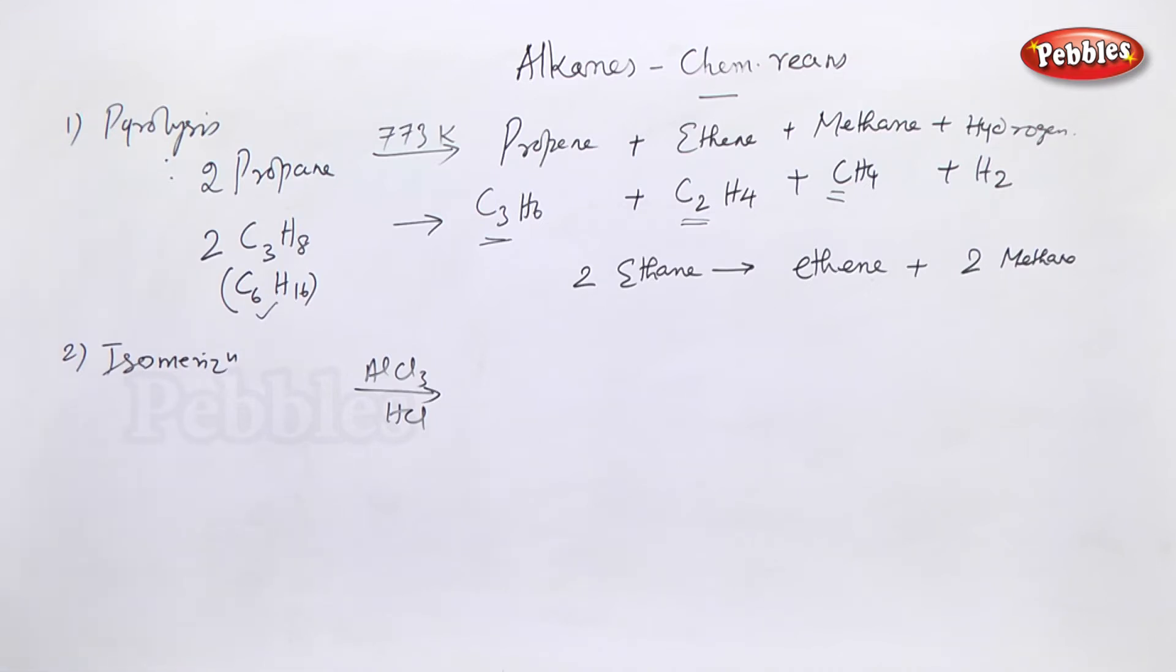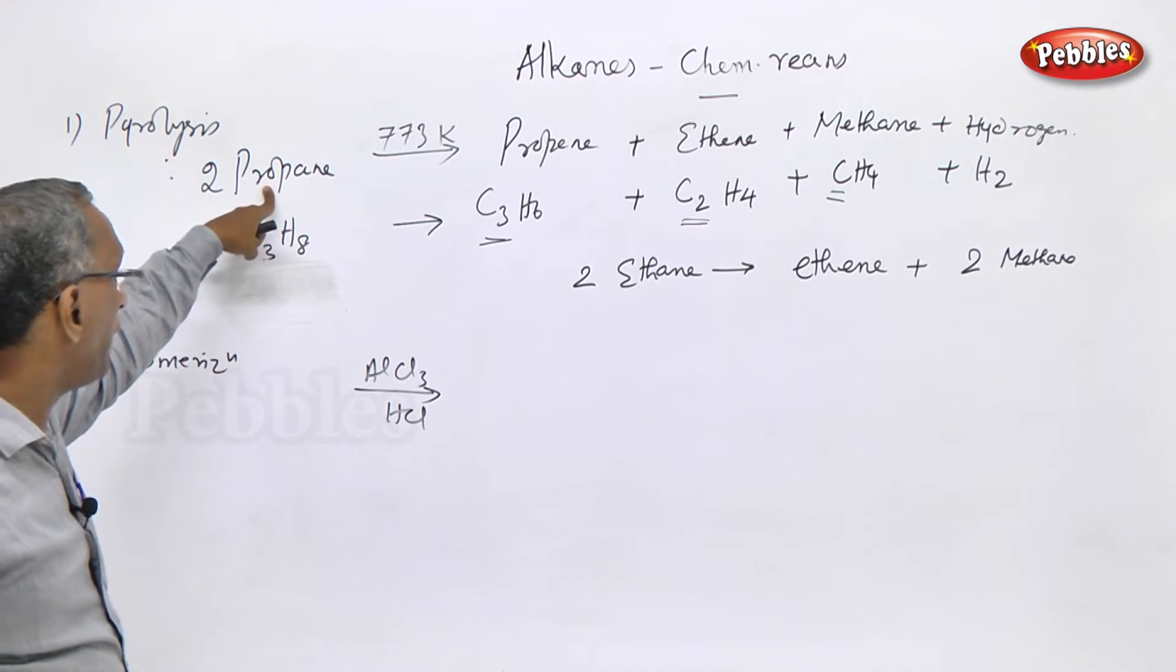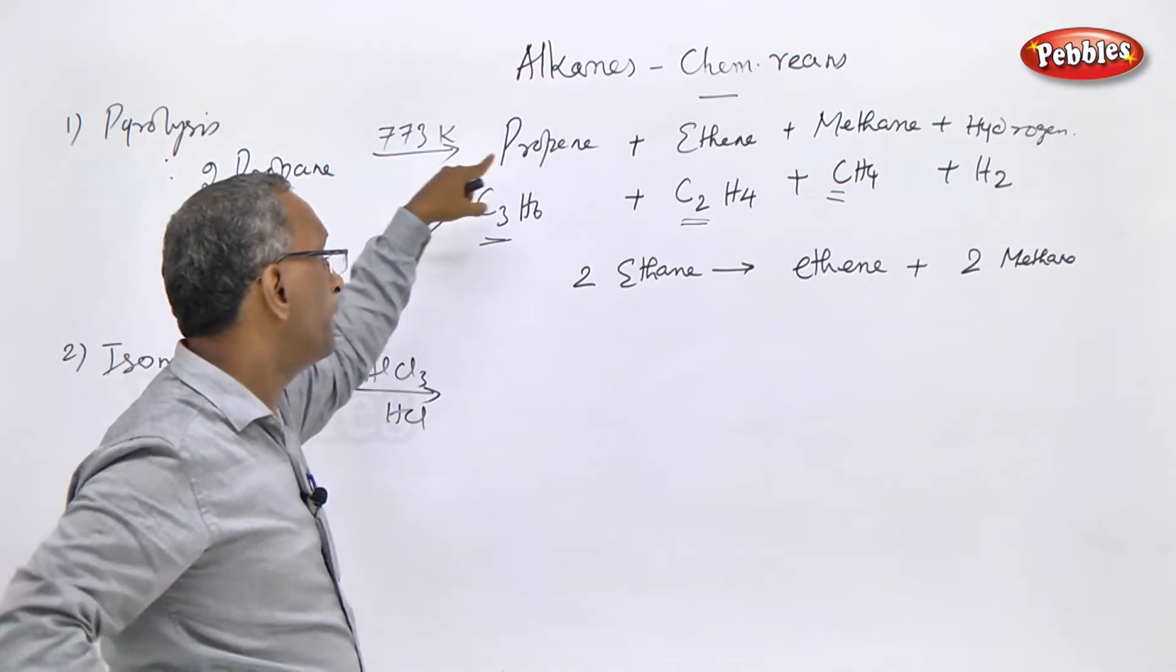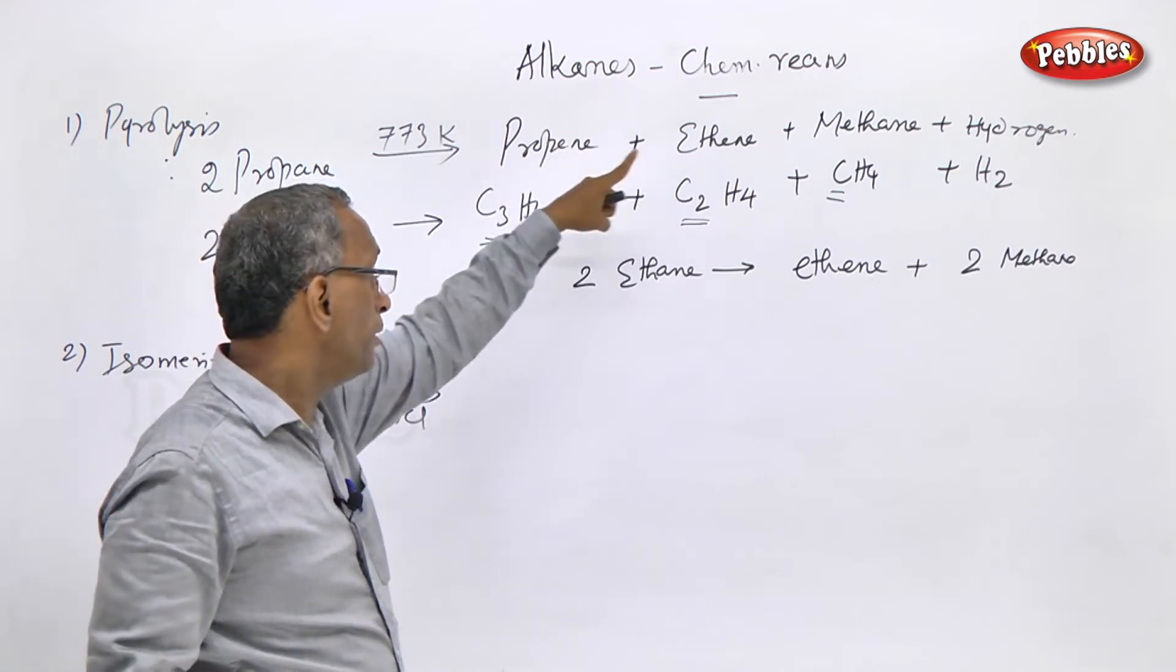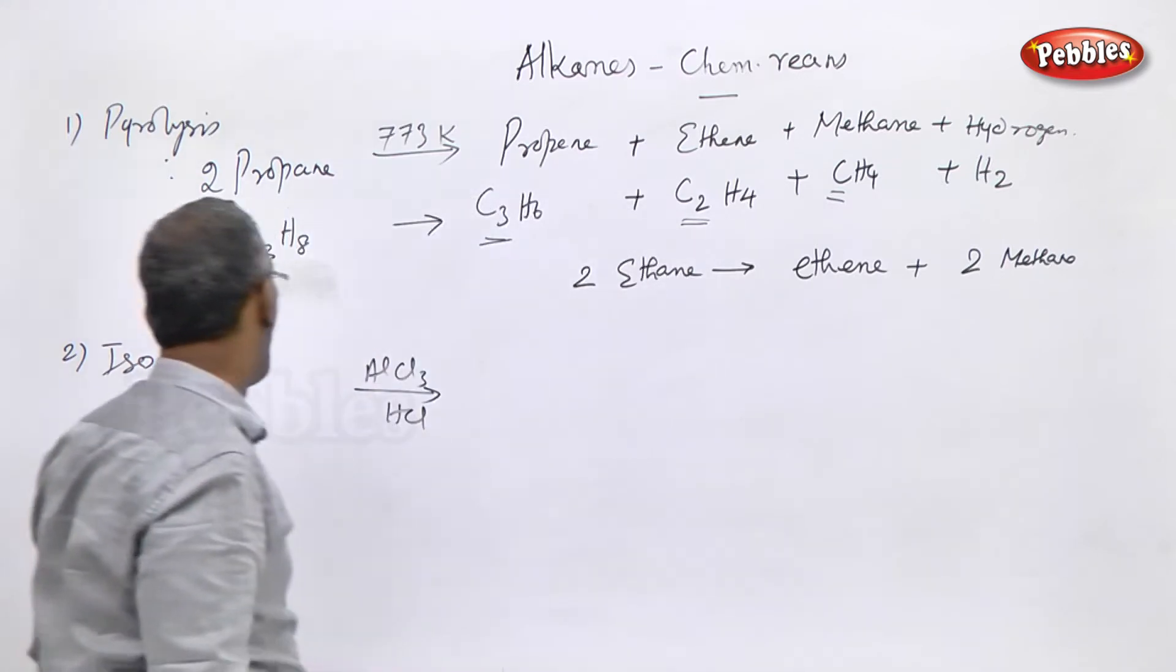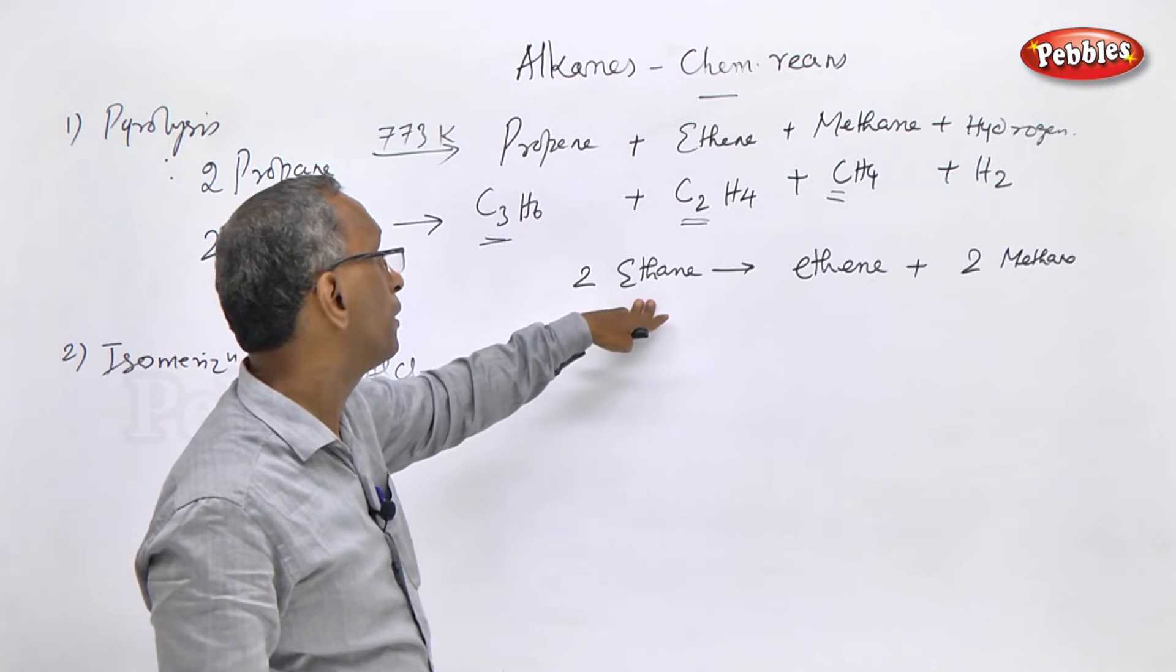Two moles of propane undergo gas phase catalytic pyrolysis. This is called gas phase catalytic pyrolysis at high temperature. Two moles of propane on pyrolysis yields a mixture of propene, ethene, methane and hydrogen.